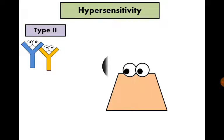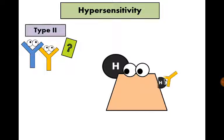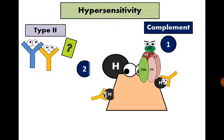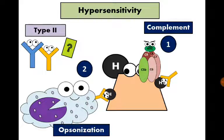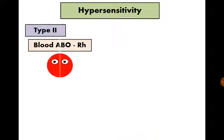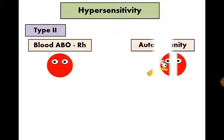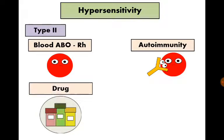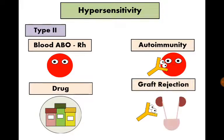Type 2 hypersensitivity occurs when a small non-immunogenic molecule becomes attached to a cell, so that antibodies can identify the cell and consider it foreign and attack it, causing complement activation, opsonization, and antibody-dependent cell-mediated cytotoxicity. Examples include blood group ABO and Rh incompatibility, autoimmune diseases, drug reactions, and graft rejection.